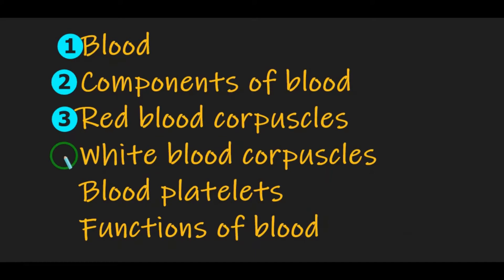Next we discussed about white blood corpuscles or leucocytes. These WBCs are colorless and they do not have a nucleus. They are found in the bone marrow, spleen, thymus and lymph nodes. White blood cells are classified into two types: granulocytes and agranulocytes. Granulocytes means granules are present in the cytoplasm; agranulocytes means granules are absent in the cytoplasm.